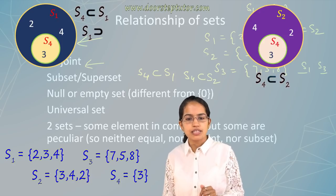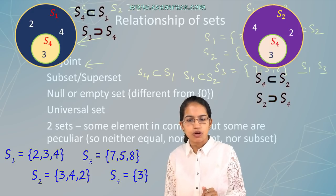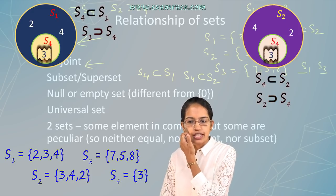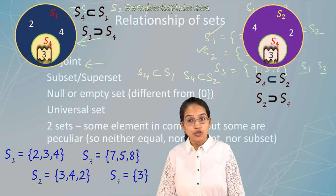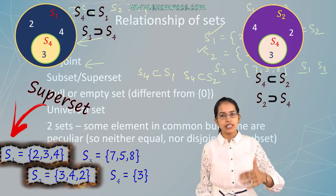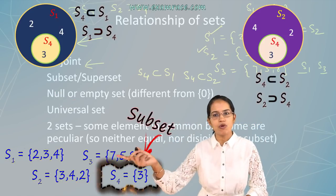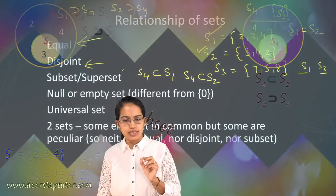When I take S4 is equal to 3, then I say S4 is a subset of S1 and S4 is a subset of also S2. Or I say S1 is a superset of S4 and S2 is a superset of S4 because this S4 which has 3 is included in S1 and S2. S1 and S2 are the supersets or S4 is the subset. I have equal, disjoint, superset and subset.